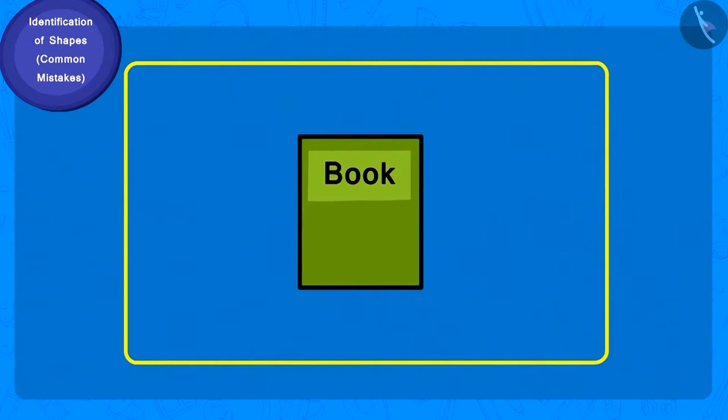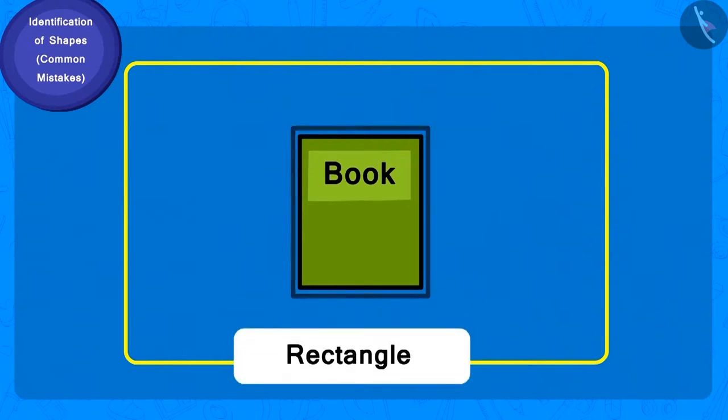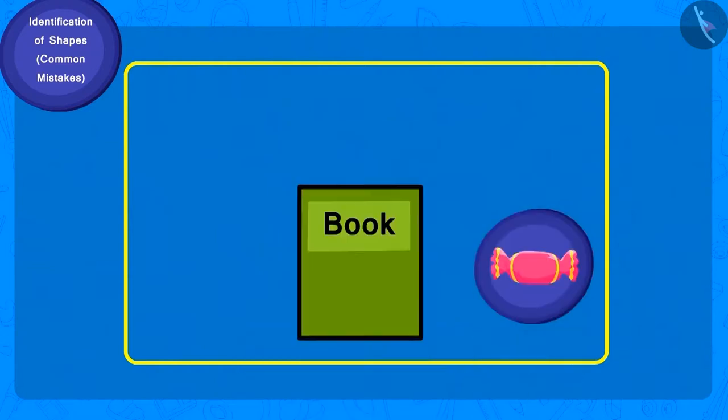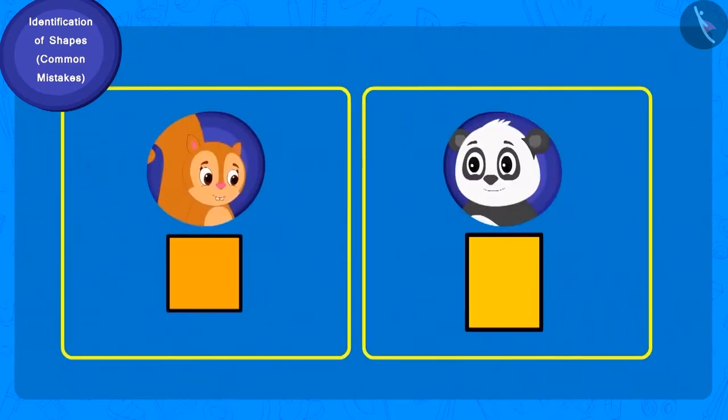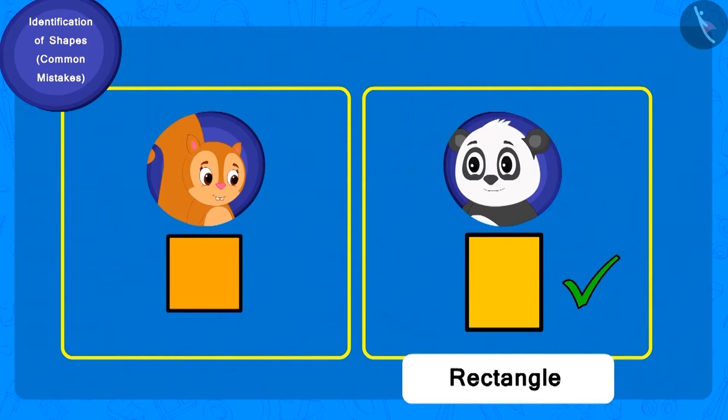So, what shape is the book? The shape is rectangle. So, who will get the toffee? Golu. So, Golu's answer, a rectangle, was absolutely right.